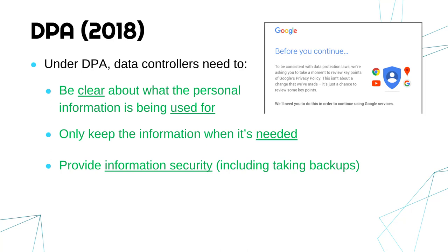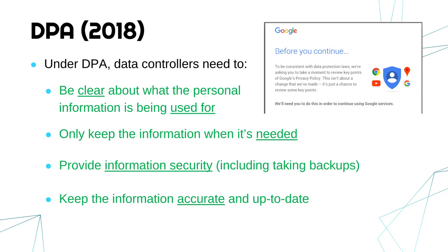Controllers also need to make sure the information is kept up to date and accurate. That's why organisations often get in touch with you asking you to update your address or your number — partly for their own purposes, but also partly to follow this law. If organisations don't do any of these things, they could get fined, and that could be millions of pounds in some cases.